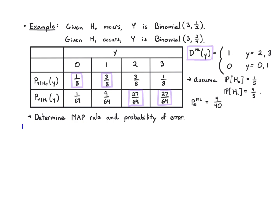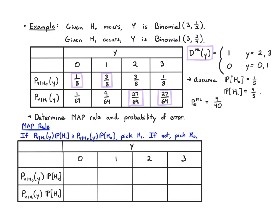The MAP rule, if you remember from the previous video, it just says decide the most likely hypothesis, which is equivalent to taking the conditional PMF and weighting it by its hypothesis probability, and then picking the bigger of the two. If P of Y given H₁ at Y times the probability of H₁ is bigger than the probability of Y given H₀ at Y times the probability of H₀, I'm going to pick H₁. Otherwise I'm going to pick H₀, ties are going to go to H₁.